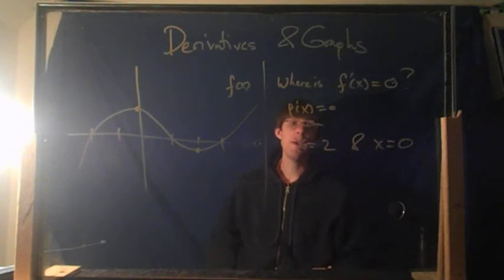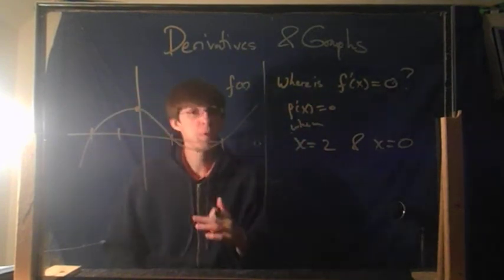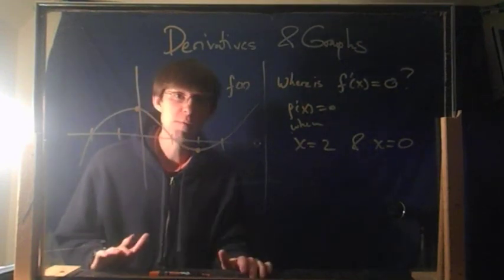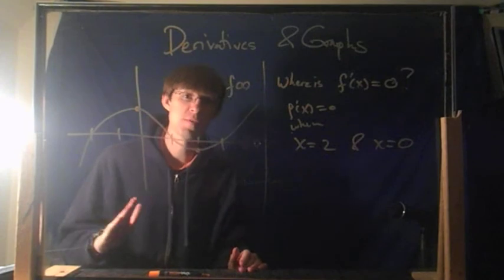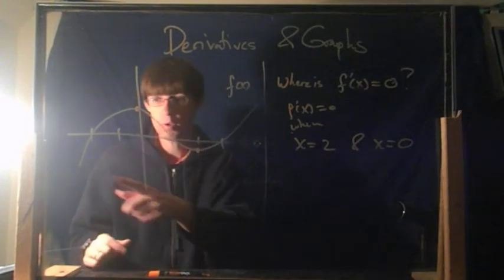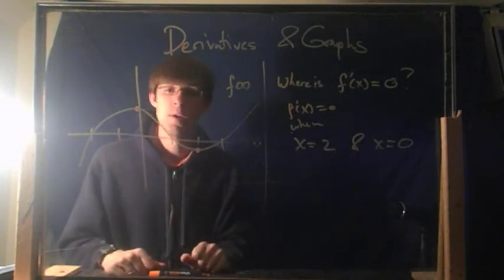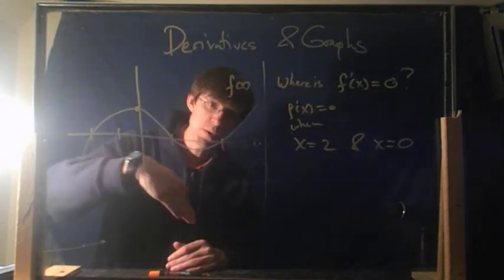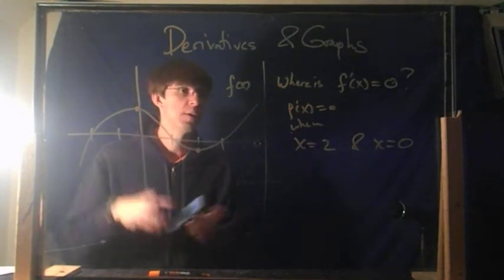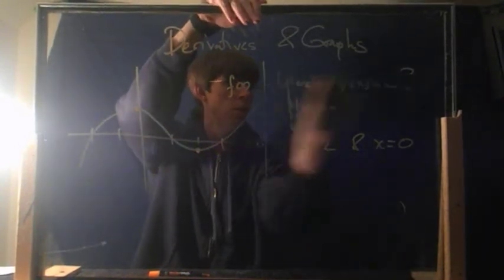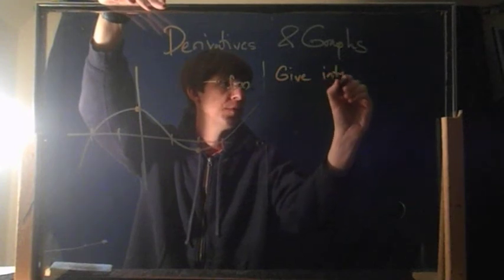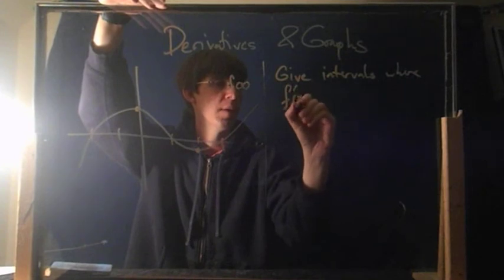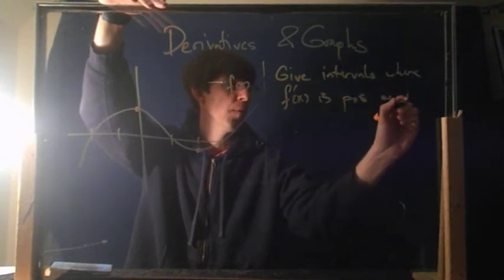How about this: where is the derivative positive? Where is the derivative negative? You can answer those questions also. You just have to remember: positive derivative means positive slope. Positive slope means it's going up as you go to the right. You can look throughout this picture — there are certain regions where the slope is going up as you go to the right, and certain regions where the slope is going down.